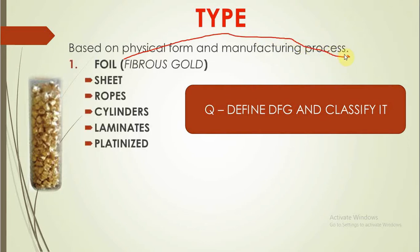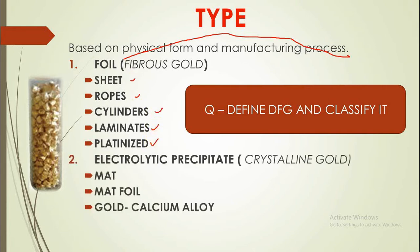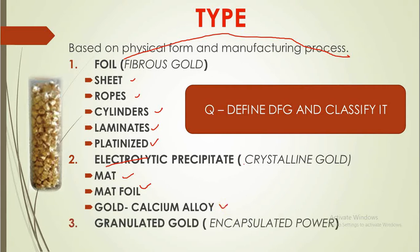The first type is foil, which is of further types: sheet, rope, cylinders, laminates, and platinized. The second type is electrolytic precipitate, which is of types: matte, matte foil, gold, and calcium alloy. The third type is granulated gold, also called encapsulated powder.